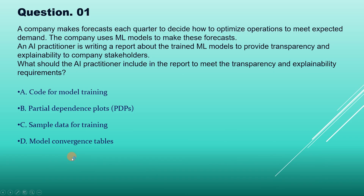The correct answer is option B, partial dependence plots. Partial dependence plots (PDPs) are a useful tool for understanding the relationship between a specific feature and the model prediction. They make it easier to see how changes in an input variable affect the forecast. Due to this reason, option B is correct.